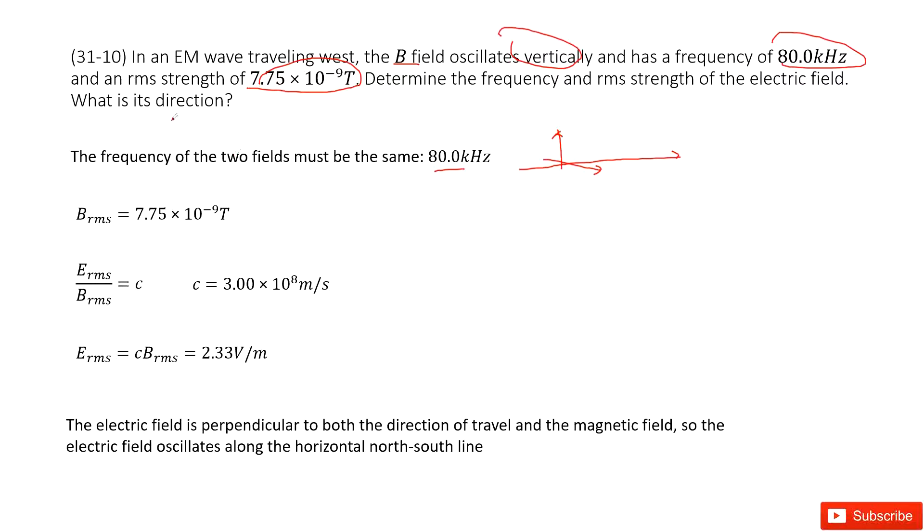The next one asks you what is direction. The electric field is perpendicular to both directions of travel and the magnetic field. So the electric field just along the horizontal and to the north-south line.